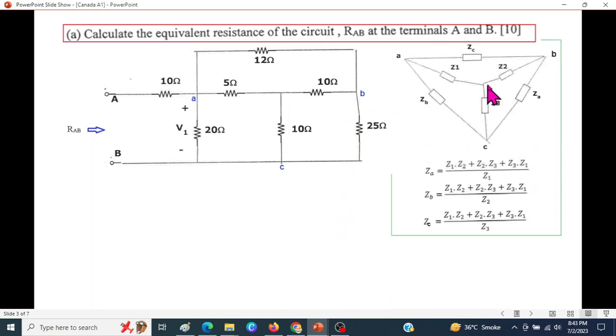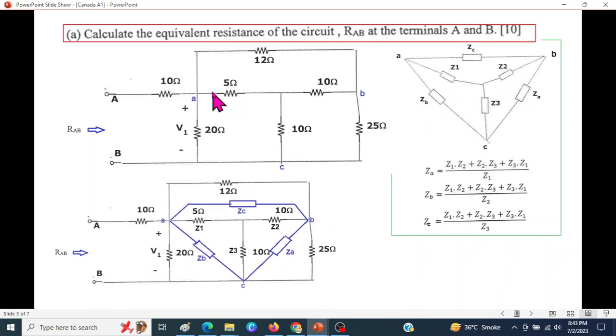Then we will be using this conversion table. I have only noted down how to convert from Y to delta. These are the values given. You can see this is Y, and these are the deltas. From here you can see ZC, this is ZA, and this is ZB. Actually, the point opposite of A is ZA, opposite of B is ZB, and opposite of C is ZC.